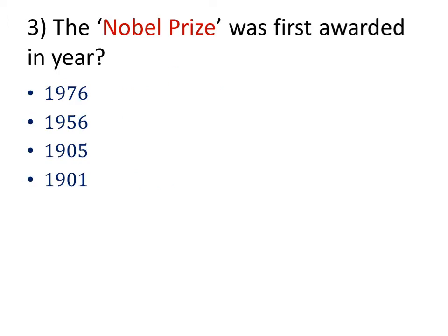The Nobel Prize was first awarded in which year? Our answer is 1901. In 1901, the Nobel Peace Prize was shared by Henry Dunant, founder of the International Committee of the Red Cross, and Frederick Passy.